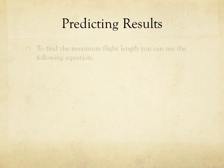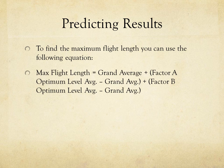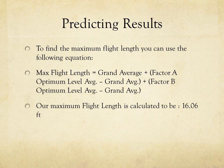To find the maximum flight length, we use the following equation: the maximum flight length equals the grand average, plus the optimum length level average minus the grand average, plus the optimum weight level average minus the grand average. Using this equation, we calculated a maximum flight length of 16.06 feet for the long airplane with no penny.